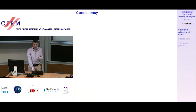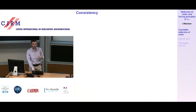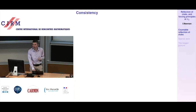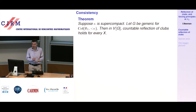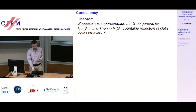This wouldn't be interesting if it weren't consistent — so let me show that it is. Since it contradicts square, your first guess is supercompact. Theorem: suppose kappa is supercompact. Let G be generic for the most natural forcing in this context — just collapse everything less than kappa to be aleph_1, so kappa becomes aleph_2 in the extension. Then in the extension, you have countable reflection of clubs for every X.